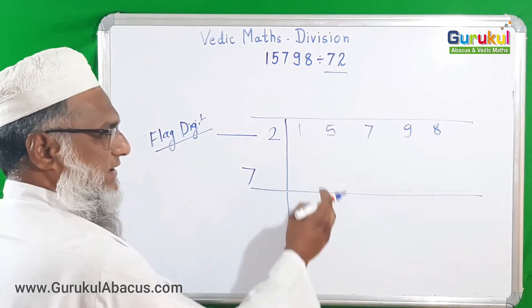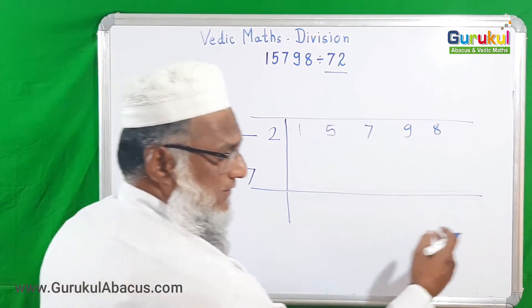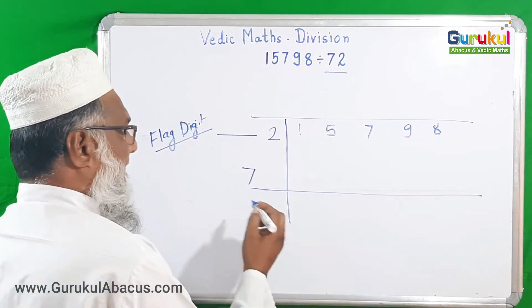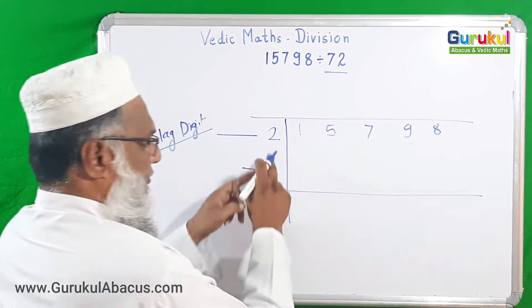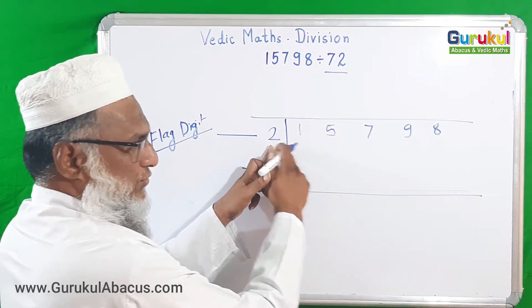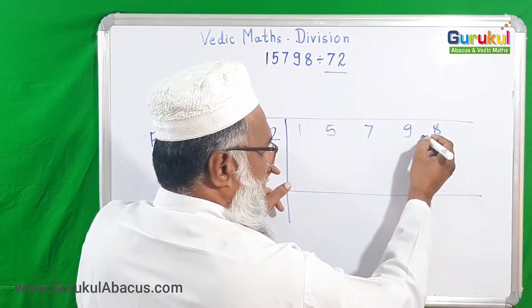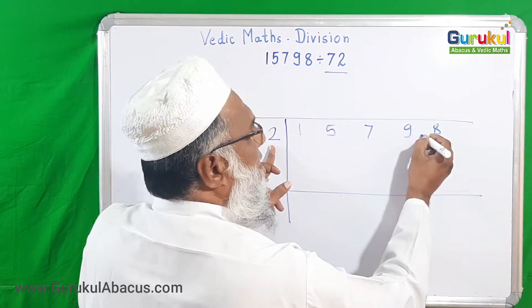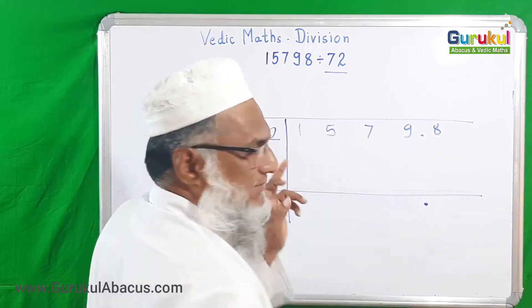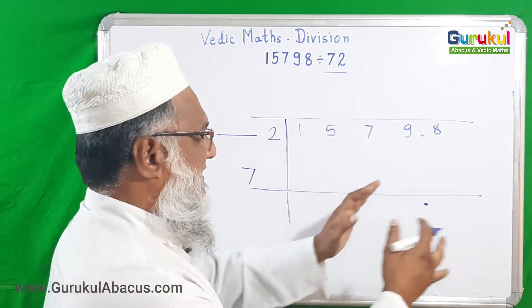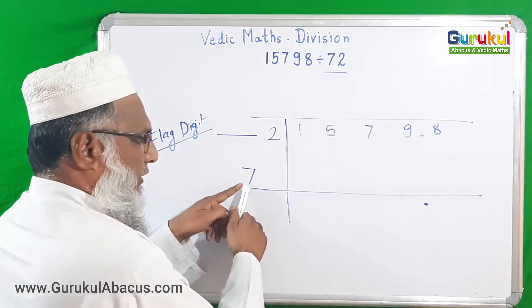Before continuing, I want to mention that our answer can be in decimal form. As a provision, I want to arrange a decimal point here. From the given number, one digit I want to put after the decimal point, so I am placing the decimal point, and exactly below that I am putting one decimal point in the answer section. Now our example can start.